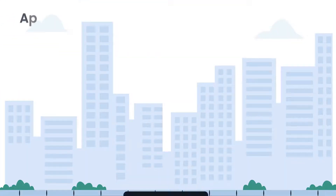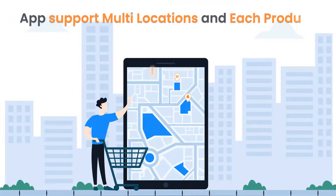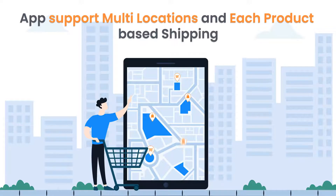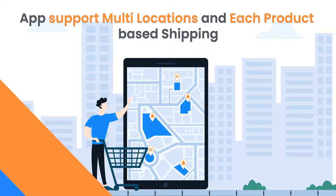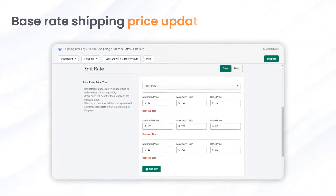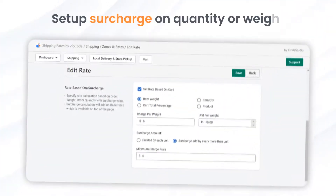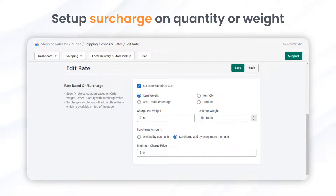The app supports multi-locations and each product-based shipping. Base rate shipping price updates based on conditions, and you can set up a surcharge on quantity or weight.